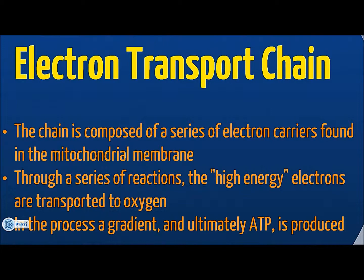The electron transport chain is composed of a series of electron carriers in the membrane of the mitochondria in the cells. Through a series of reduction-oxidation reactions, high-energy electrons are passed from NADH and FADH2 to oxygen. Ultimately, the electron gradient is produced along with ATP.